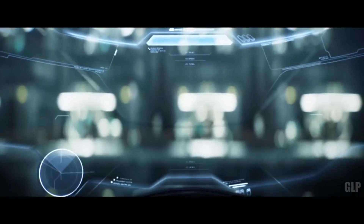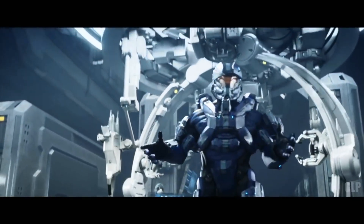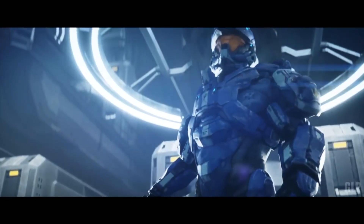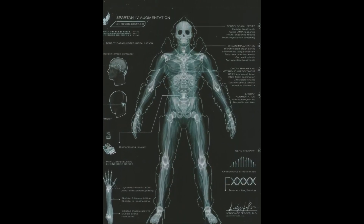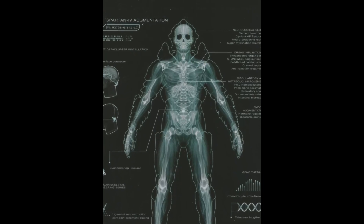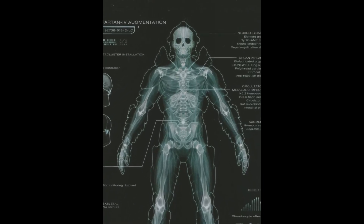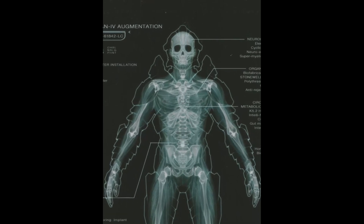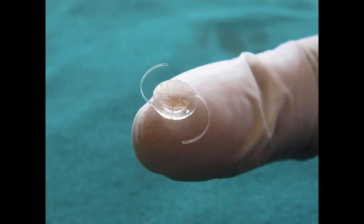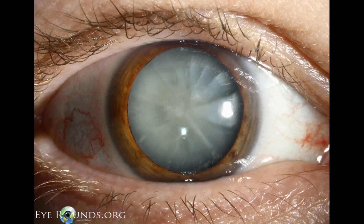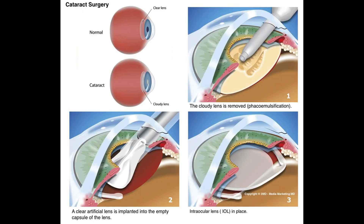Information on the Spartan IVs' eye augmentation is even more limited: corneal implants are provided, improving the subject's eyesight and night vision — that is literally all we get. That said, we have real-world equivalents from which we can infer interesting details, as well as effects reported by Spartan Edward Buck. A real-world analogue is cataract surgery, where the natural lens is removed and replaced by an artificial lens that lasts a lifetime.